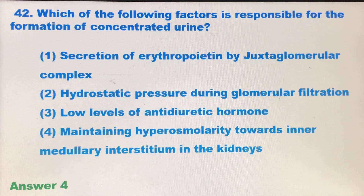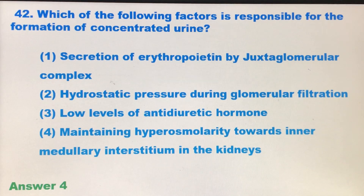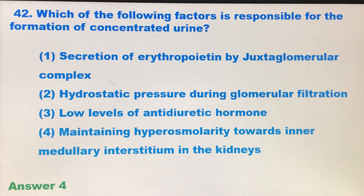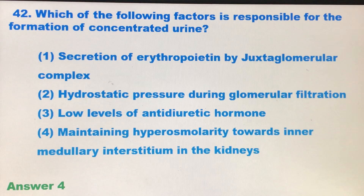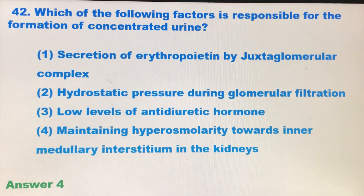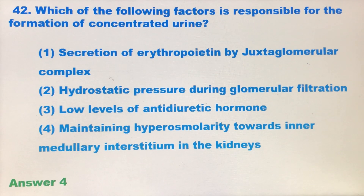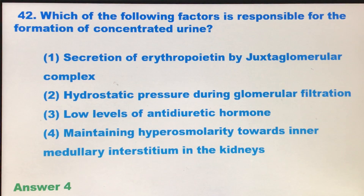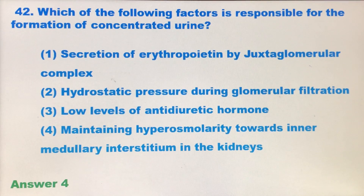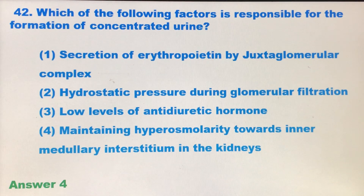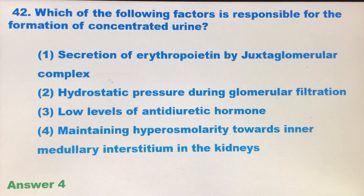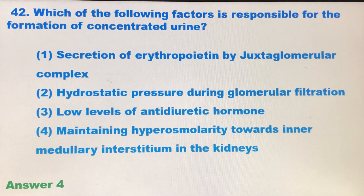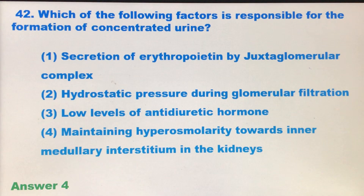For example, in the descending limb of Henle's loop, if the flow is downwards, then in the vasa recta the flow of blood is in the upward direction. Similarly, in the ascending limb of Henle's loop, if the flow is upwards, then the flow of blood in the vasa recta is downwards. This counter-current mechanism in the vasa recta and Henle's loop facilitates an exchange of molecules.